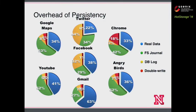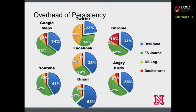I collected IO traces from seven of the most popular apps from Google Play. These bar charts illustrate the destination of all write IOs. The blue parts are writes to real data, green parts are writes to file system journals, yellow parts are to database logs, and the red parts are redundant writes induced by double-write. Only about one-third of all writes are to real data; all others are exclusively for persistence enforcement. In Chrome, only 33% of writes go to real data, and in Twitter the number is even smaller at 22%.